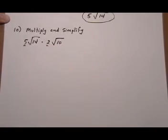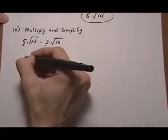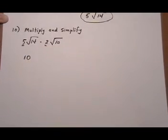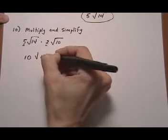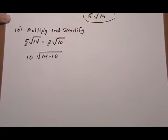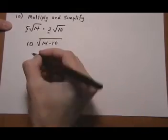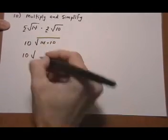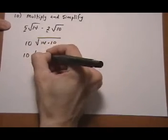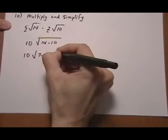And I will go ahead and do 5 times 2, and just bring that to the outside. 5 times 2 gives a 10. Root 14 times 10 under one radical. And now we want to factor them and see if we can create a perfect square. And that way we can take a square root. 10 times 14 is 7 times 2. 10 is 2 times 5.